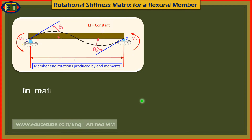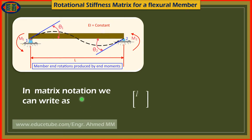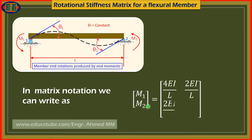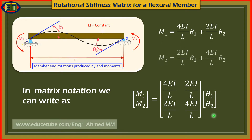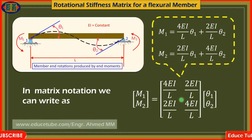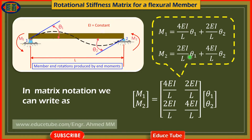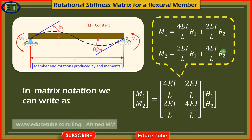Both equations can be written in matrix notation, with the moment vector [M1, M2], a stiffness matrix, and the rotation vector [theta1, theta2]. The stiffness matrix is formed from the EI over L coefficients taken from the two previous equations, assembling all stiffness factors into a 2-by-2 matrix.